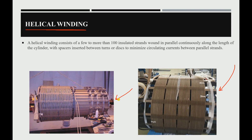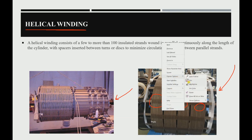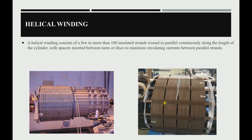the circulating current between the parallel strands. As you can see here, between this big turn we can see a disk, another disk — and between them you can see this spacing. This part is called the spacer. There is spacing between these groups of windings or turns.